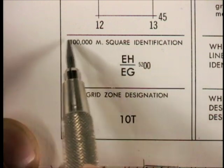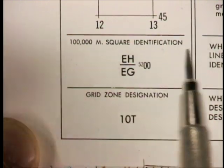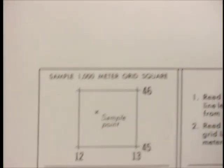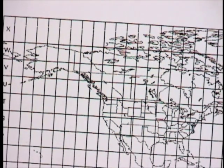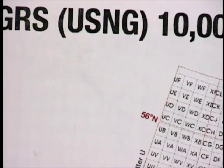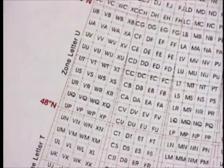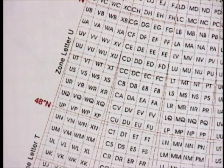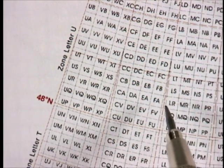To make it easier, we also have, MGRS adds a thing called 100,000 meter grid squares. Those regularize, allow you to regularize the designation by making the square, the grids not rectangular, but actually square.